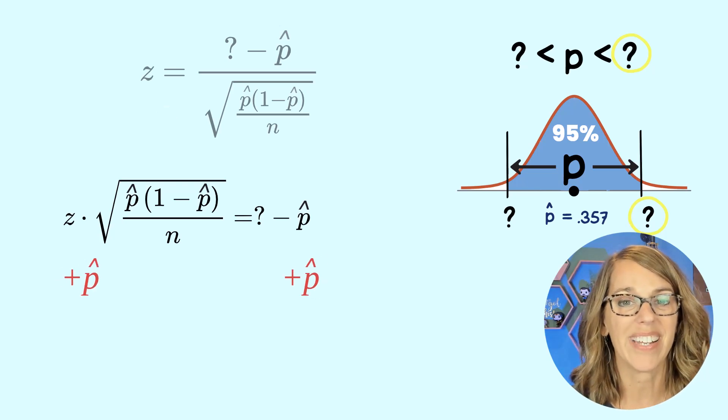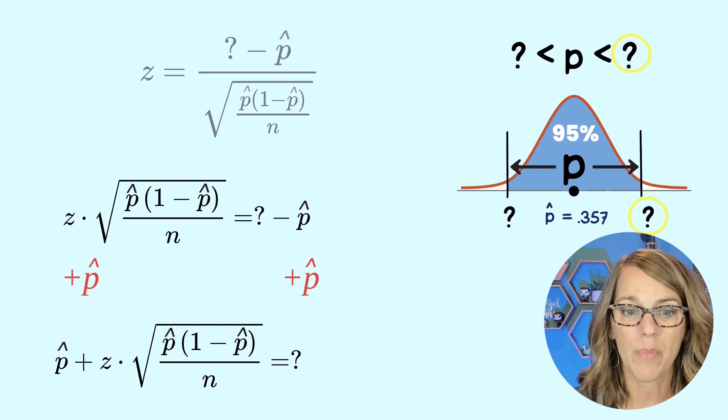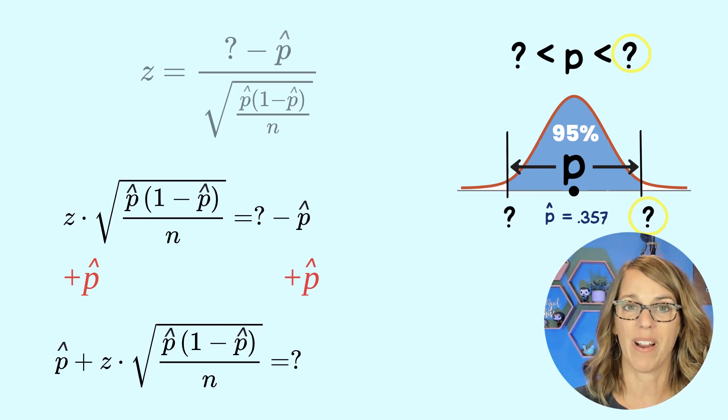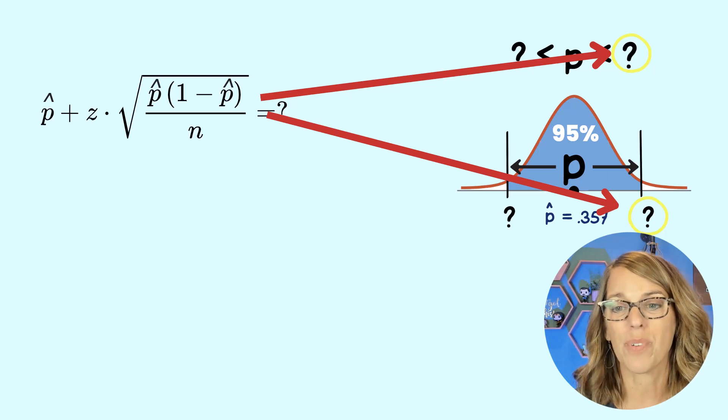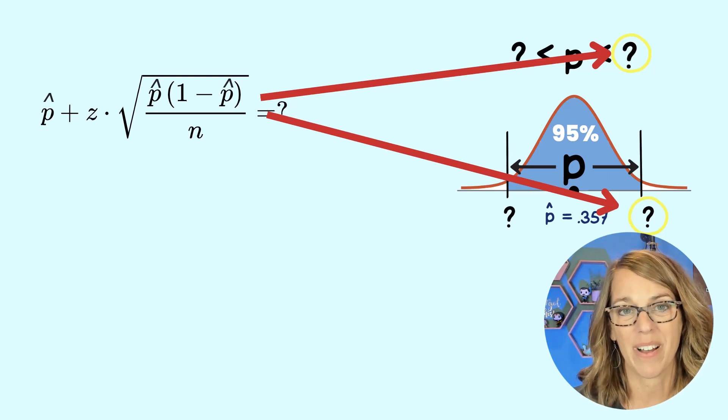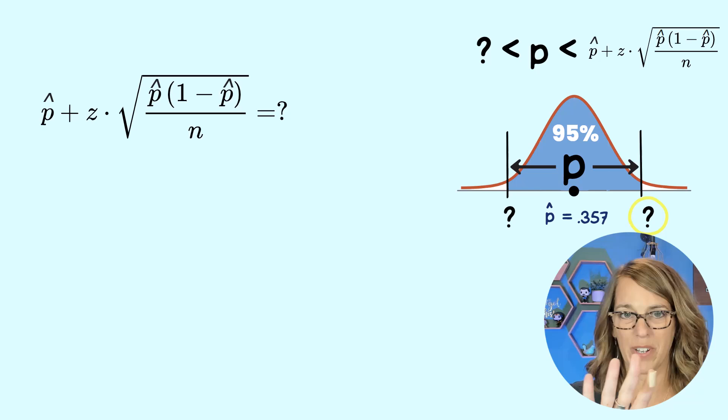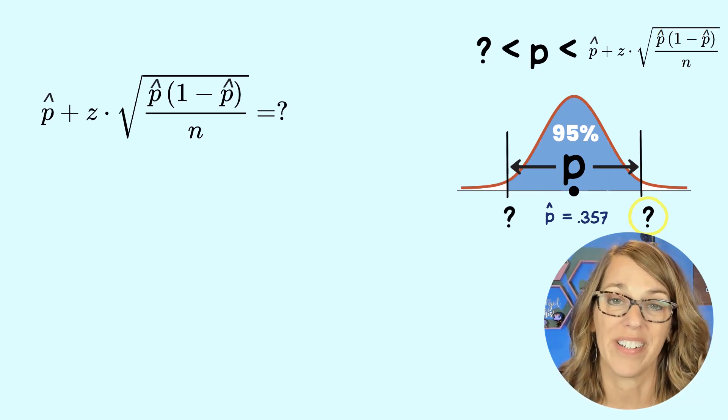I just want to add P hat to both sides. And we end up with the formula for that question mark, which is our upper limit. So we're going to replace it in our inequality. It didn't fit below my graph. So I'm going to leave a question mark there, but I was able to put it up there in my inequality.